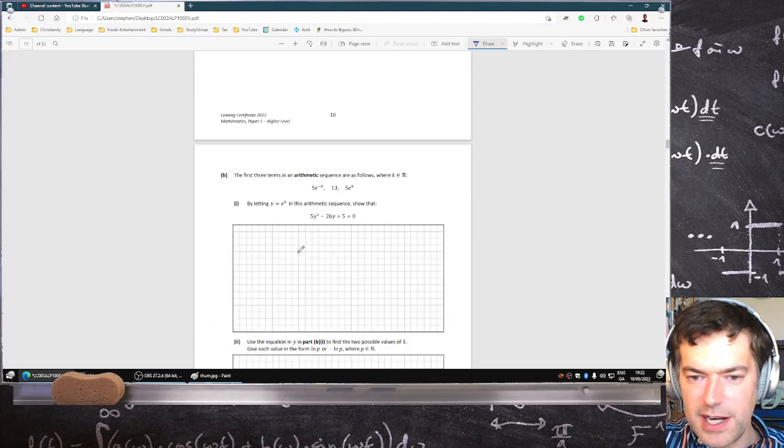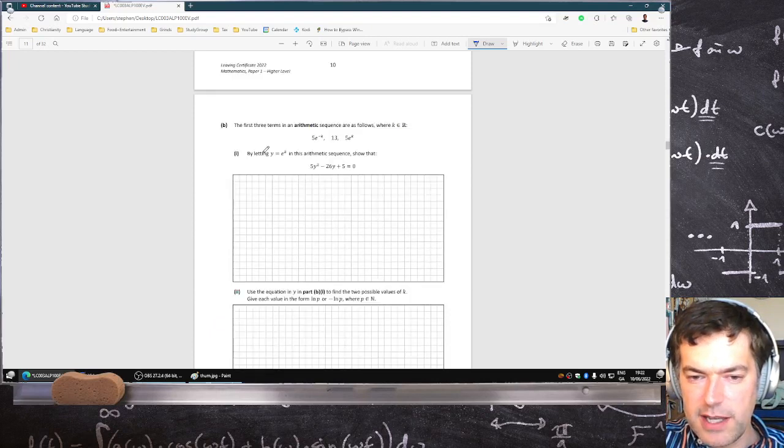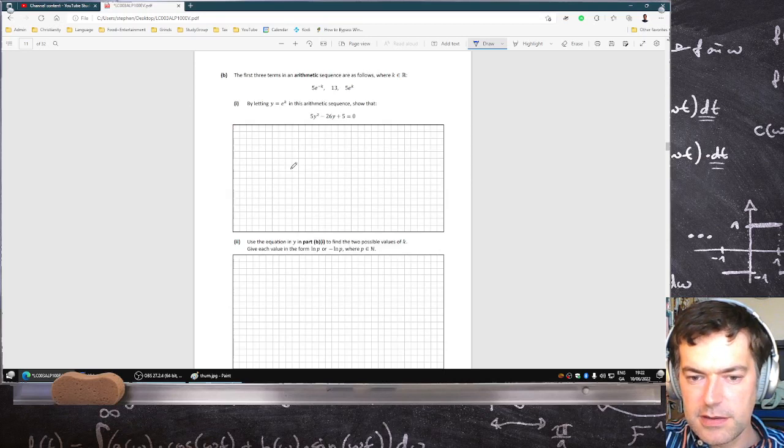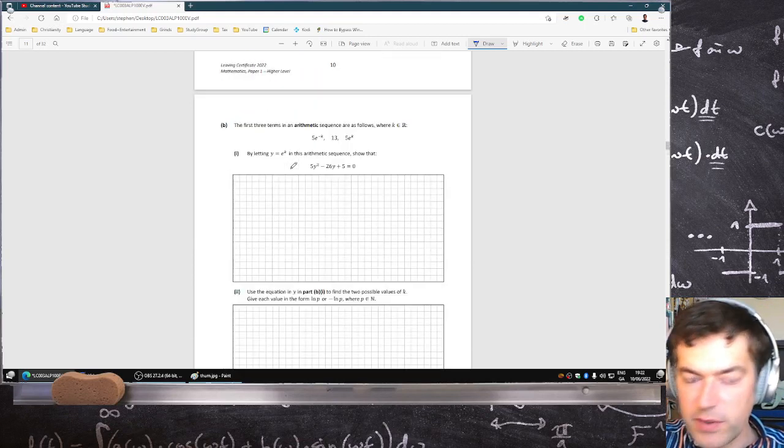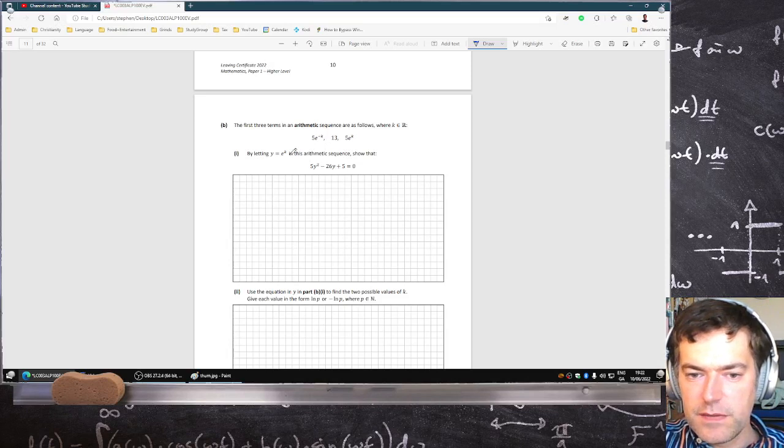The first three terms in an arithmetic sequence are as follows. By letting y equals e^k in this arithmetic sequence, show that... Okay, so if y equals e^k, the first term will be 5 over y, then 13, then 5y.